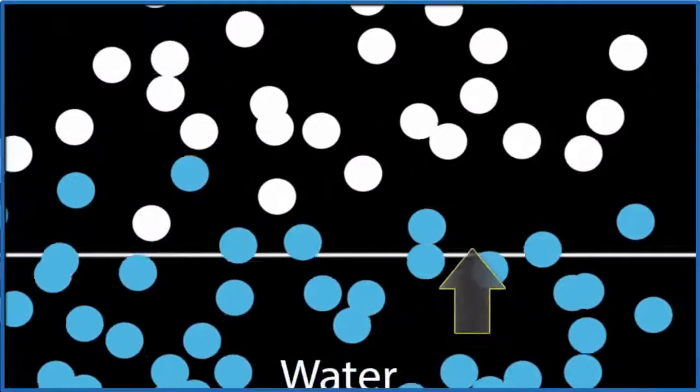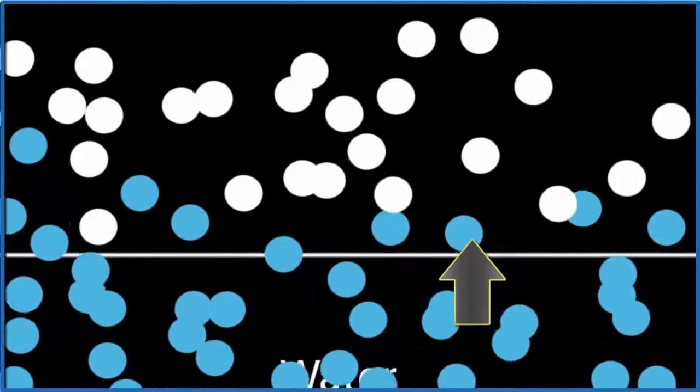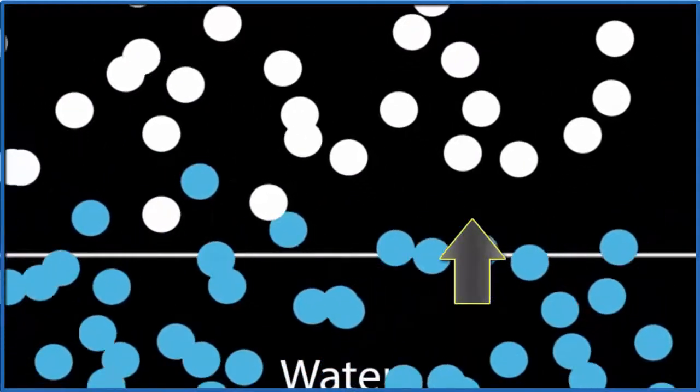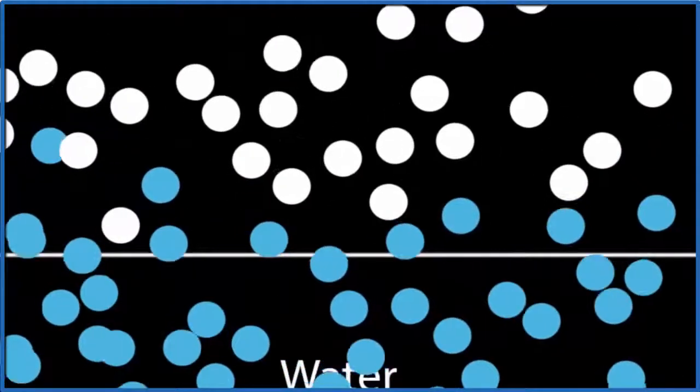But water molecules can create pressure when they leave the liquid. As these faster-moving water molecules escape, they collide with the molecules of air. This creates pressure, and we call it vapor pressure.